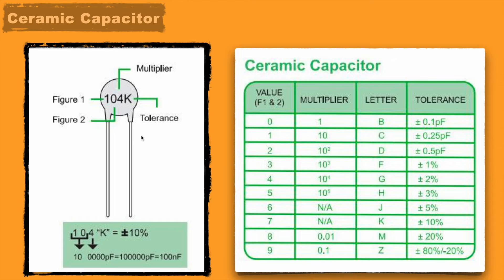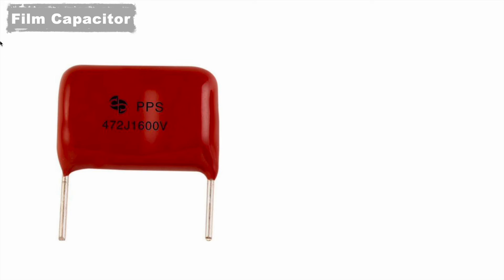Now, let's see the film capacitor. On top of the film capacitor, we can see this kind of coding is present over there. And its value we can easily derive with our previous understanding. So here 472J.